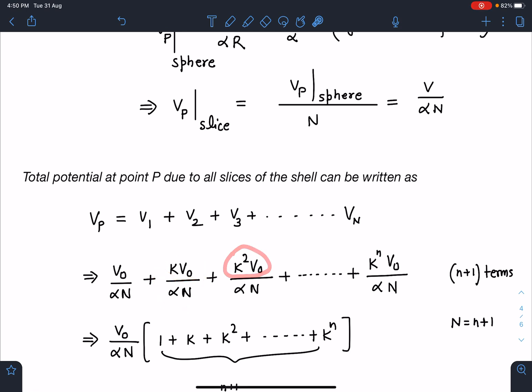Next one is having k²V₀ by αN, and like this we will have k to the power n V₀ by αN. I am taking n+1 terms here. Total number of terms will be n+1 because you can see here k to the power n, first is like k to the power 0, so there are going to be n+1 terms.